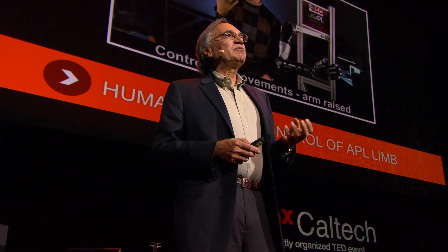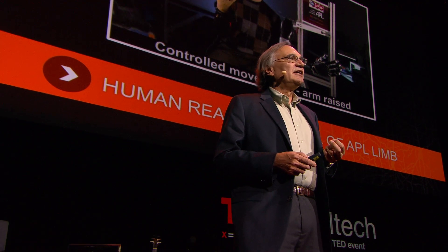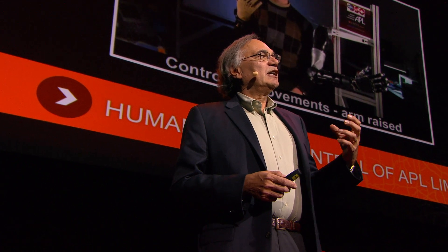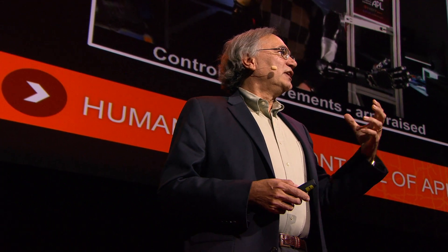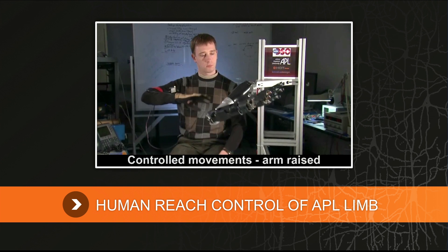One of the projects we're working on, funded by DARPA, is called the Revolutionizing Prosthetics Program. We're collaborating closely with the Applied Physics Laboratory at Johns Hopkins, and they've developed, to my knowledge, the most sophisticated current robotic limb, which has many degrees of freedom and is very similar to an actual human limb.